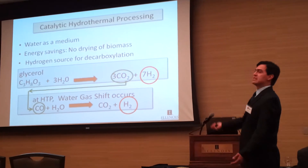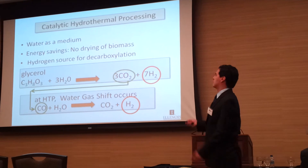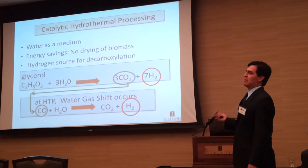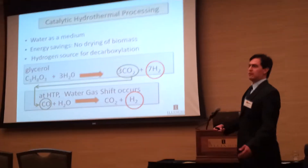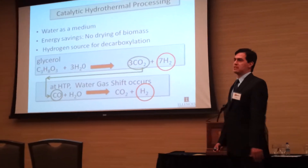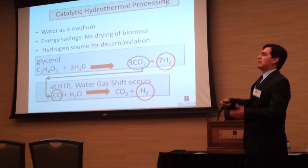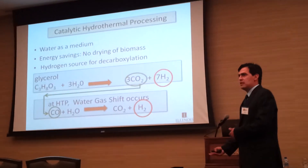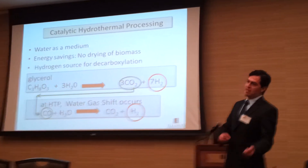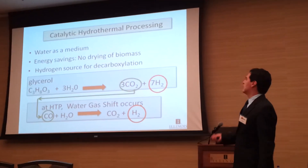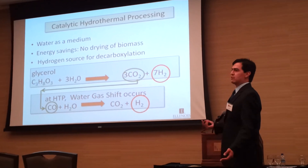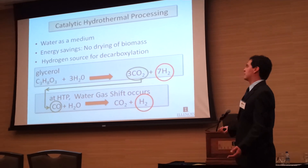Because it is algae and has a high moisture content, we are using water as a medium in catalytic hydrothermal liquefaction or processing. One benefit is that, unlike corn which is already dry, algae has a high moisture content and would otherwise require energy-intensive drying. With hydrothermal processing, you don't have to dry it — you are saving money instead.